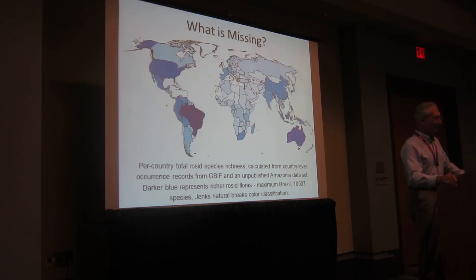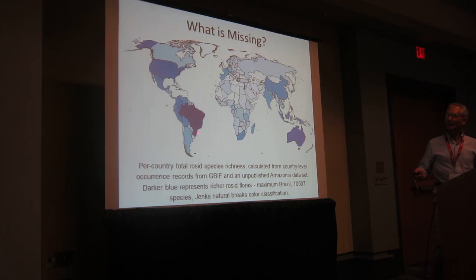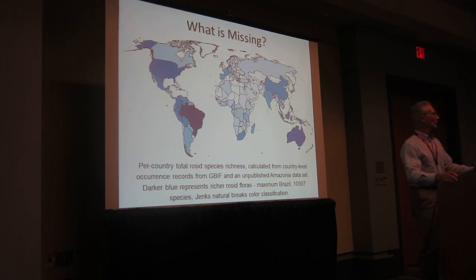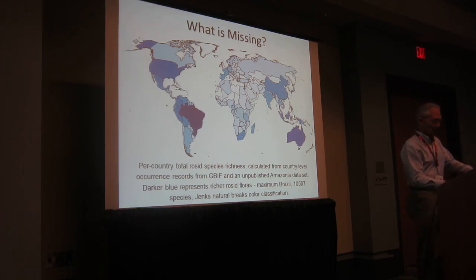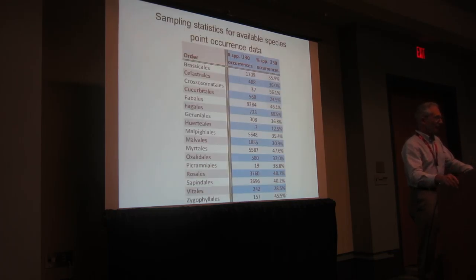This is highly biased. What is missing? Most of the rosids are in tropical South America and in China and Asia, and of course those data are not yet georeferenced — we don't have those available and can't do anything with them yet. This prevented us from doing any big synthesis with the rosids.